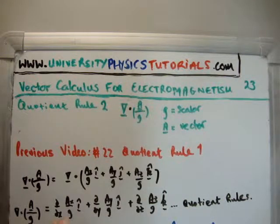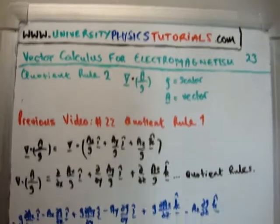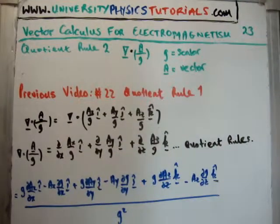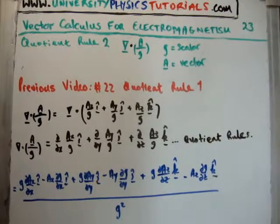Notice, of course, that we're taking the derivative of a quotient, which means we must apply the quotient rules for derivatives. So if we apply the quotient rules for derivatives, we'll get the following.